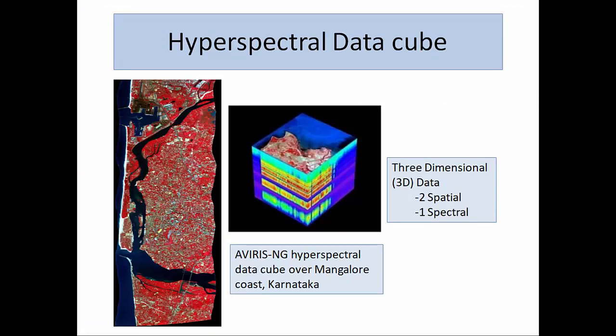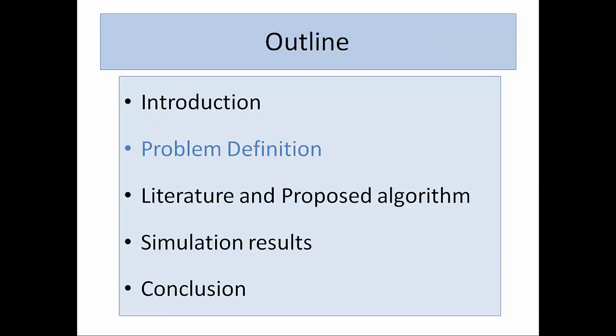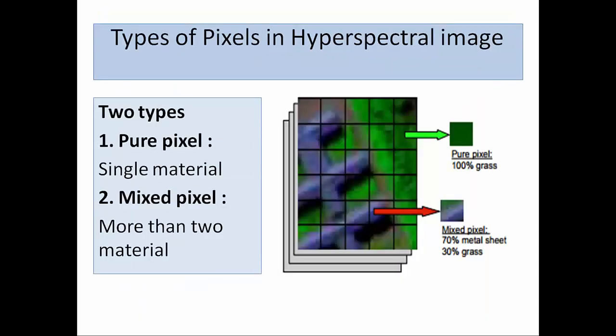The hyperspectral data cube is shown here. It is for the Mangalore region on the Karnataka coast, and there are around 400 bands. Each band has some spectral resolution, and the bands together represent one continuous spectra — a spectroscopic spectra. Each band covers around one nanometer and spans from ultraviolet to visible to infrared, covering the 300 to 2500 nanometer range, and this particular dataset extends to more than 4000 nanometers.